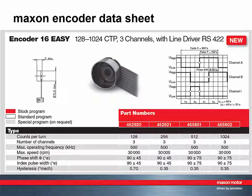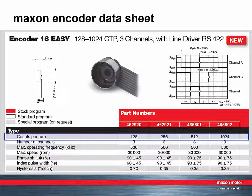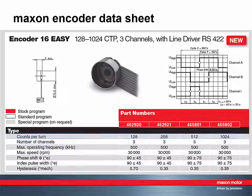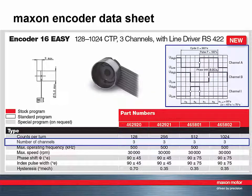Now, have a look at the Maxon encoder data sheet. Where can you find the information we have been discussing? The resolution is given in counts per turn. The number of channel 3 indicates that there is an indexed channel. Without indexed, there are only two channels, A and B.